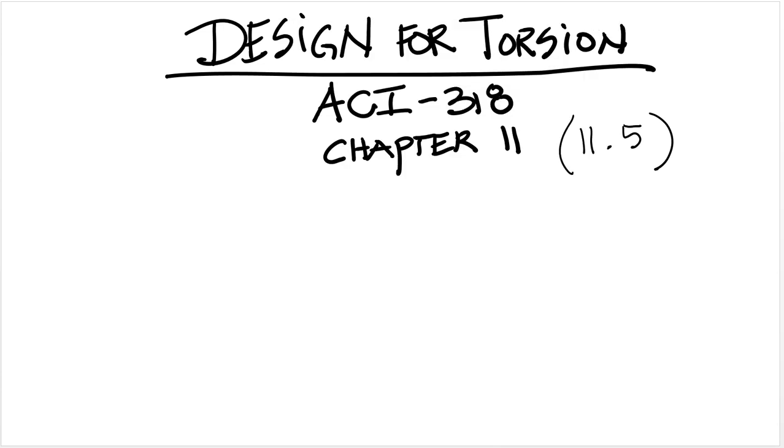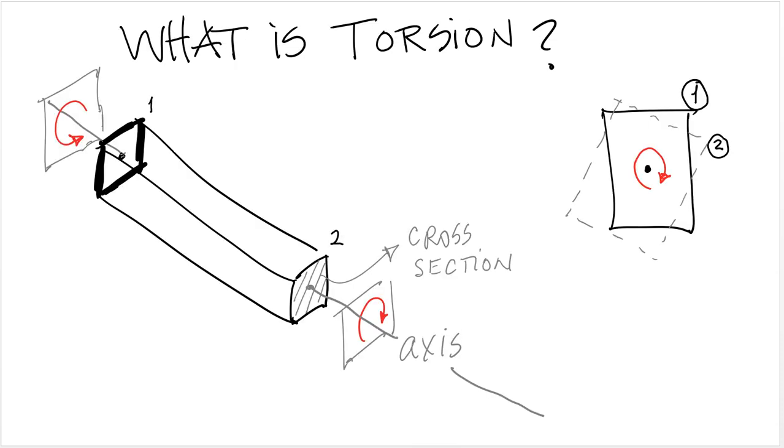In this lecture we're going to talk about design of reinforced concrete members for torsion. We are going to follow the recommendations of ACI 318, which can be found in the chapter for shear and torsion, chapter 11, specifically after section 11.5 which is dedicated for torsion. First of all, let's review some fundamental aspects.